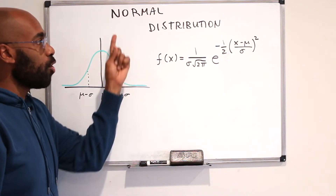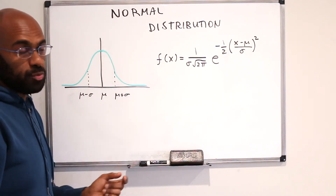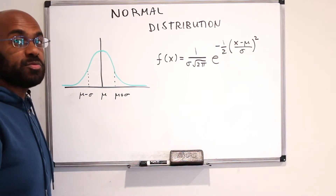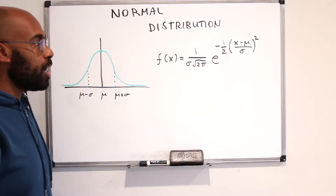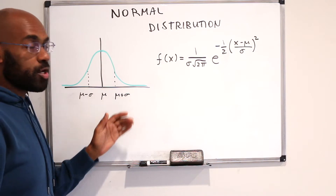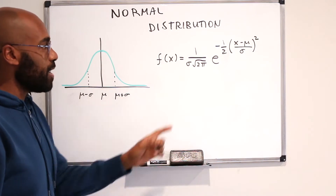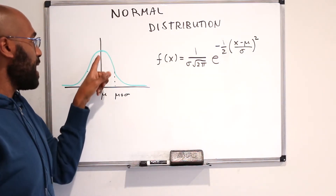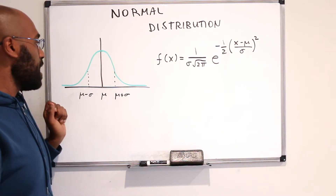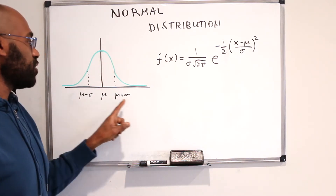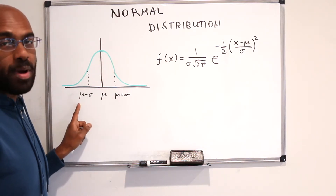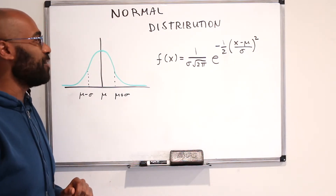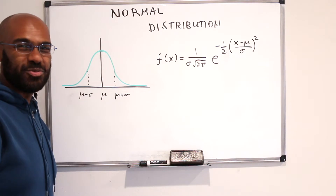In today's video we're going to talk about the normal distribution and dispel three properties of it. One, why the area under the curve is one no matter what sigma and mu are. Two, why there's a maximum at mu. And three, why there are inflection points at mu minus sigma and mu plus sigma.